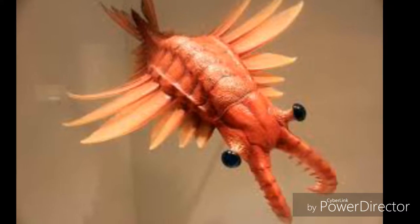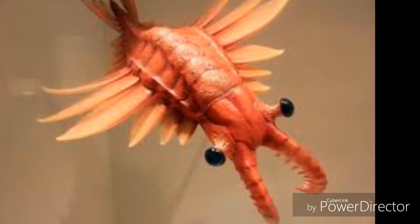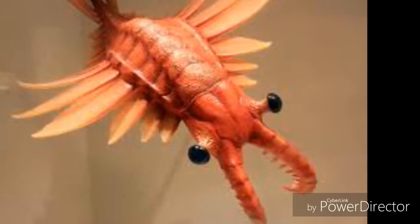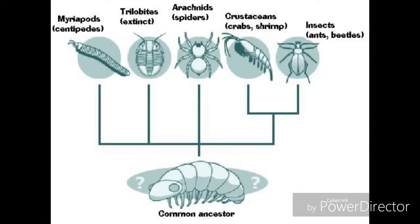Anomalocaris — meaning abnormal shrimp or unusual shrimp — is placed in the extinct genus known as Anomalocaris, which is widely noted for being closely related to the ancestral arthropods.